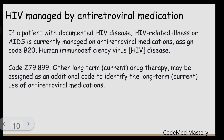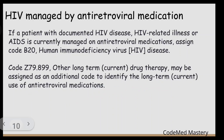The next guideline covers HIV managed by antiretroviral medication. If a patient with HIV disease is currently managed on antiretroviral medications, we code B20 for the HIV. Additionally, Z79.899 — other long-term drug therapy — should be assigned as an additional code to identify the long-term or current use of antiretroviral medications.